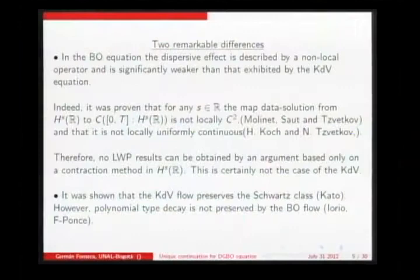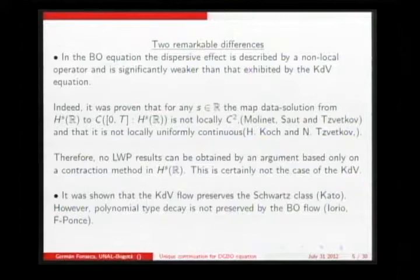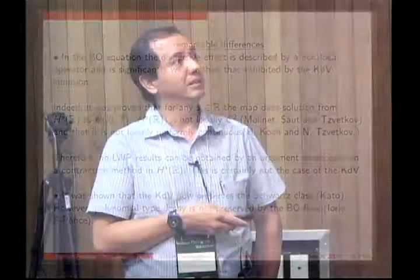This means we cannot use the contraction method for the Benjamin-Ono equation; for its solvability we rely on compactness arguments and energy type estimates. In contrast, for KdV we use Picard iteration. The second striking difference is that the KdV flow preserves the Schwarz class — a result by Kato. For the Benjamin-Ono equation, Iorio established around 1986 that not even polynomial type decay is preserved, valid for integer values of the decay, and recently extended to fractional values with Gustavo.